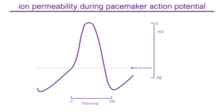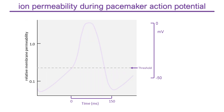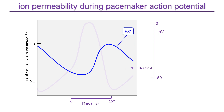We will now look at the permeability changes in more detail. As before, the permeability of each ion is plotted relative to potassium at the lowest membrane potential. Looking first at potassium ions: as in muscle cells, the potassium permeability is highest at the most negative potentials, drops during the upstroke and peak of the action potential, then increases rapidly to repolarize the membrane.